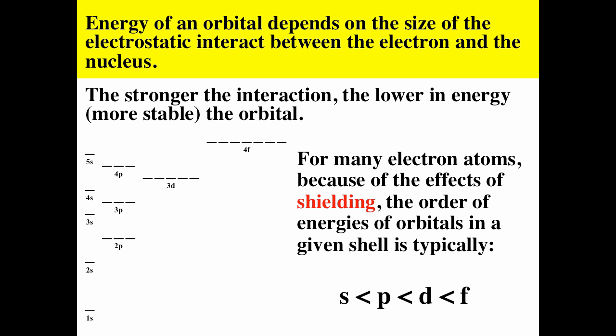The general orbital energy diagram comes from two things: smaller n means closer electron density to the nucleus and greater stability; and from shielding, in any shell s is lower than p, which is lower than d, which is lower than f. Combining those two factors gives us the orbital energy diagram.